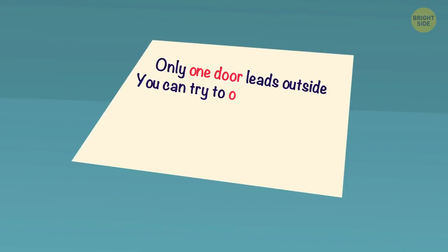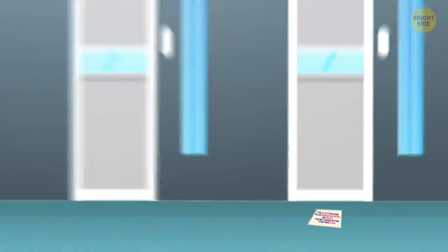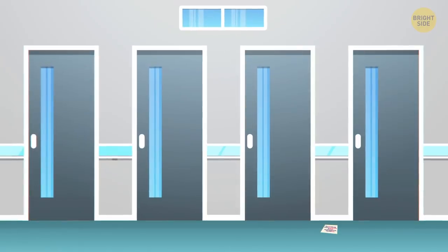It was a note that said, only one door leads outside. The other three don't lead anywhere. You can try to open just one door and only once. If you don't succeed, all of them will get locked forever. Harrison thought for a while and made the right choice. How did he figure it out?